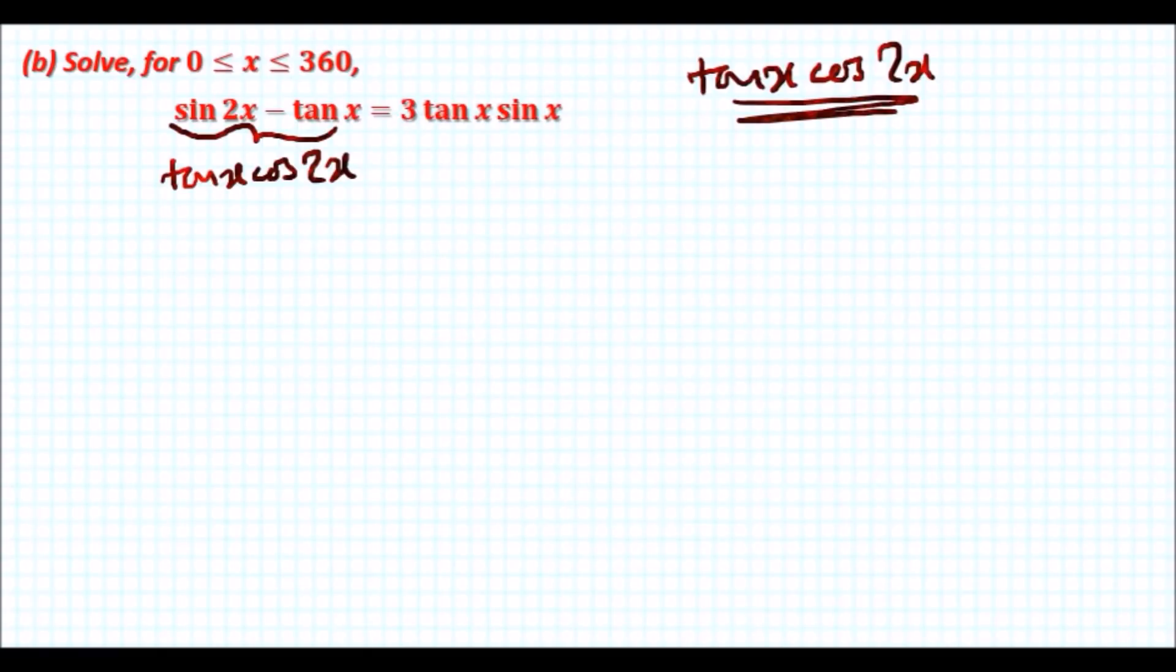We could actually assume that this whole side can be rewritten as tan x cos 2x, the reason why is because we cannot actually solve this, or maybe we can, but it's just very long-winded and difficult.